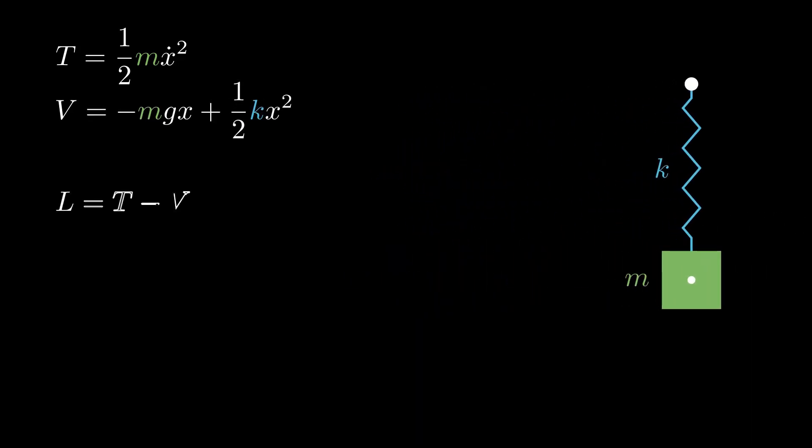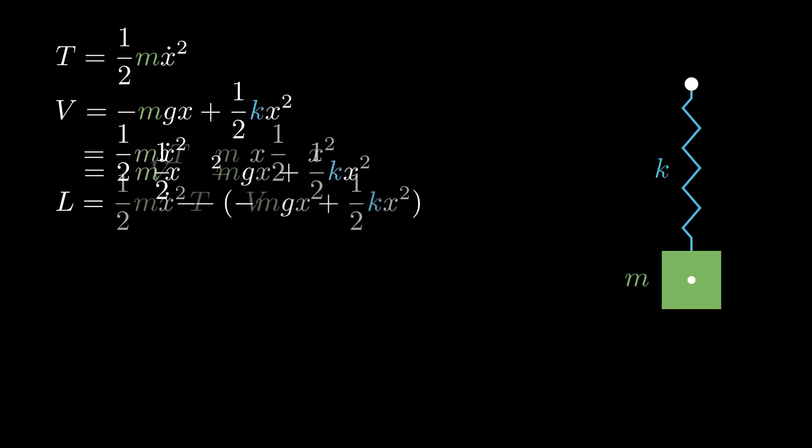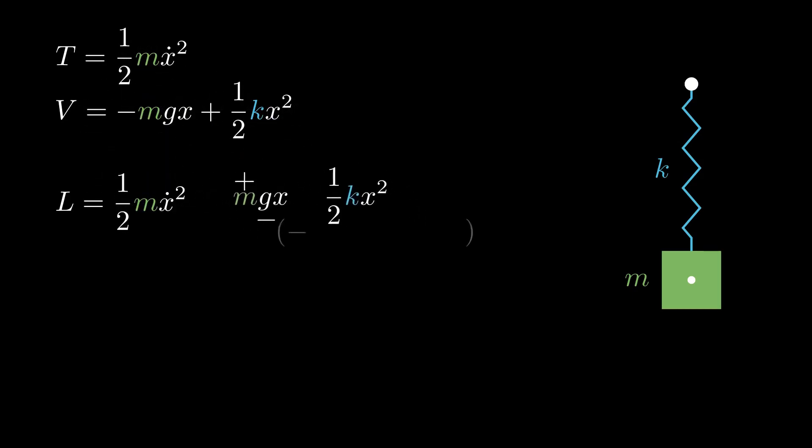Now we plug T and V into the Lagrangian and simplify. Our system only has one coordinate and that's just x, so we have one Euler-Lagrange equation. First, we'll take a derivative of L with respect to x dot. Then we take a derivative of L with respect to x. Solving for x double dot, we obtain our equations of motion for the spring mass system.